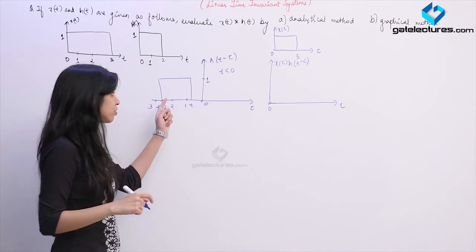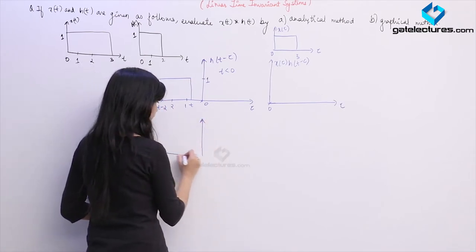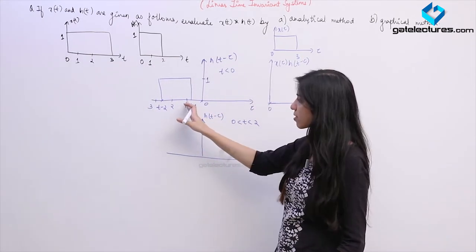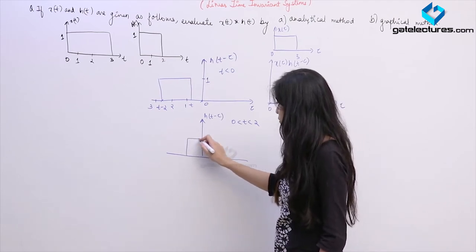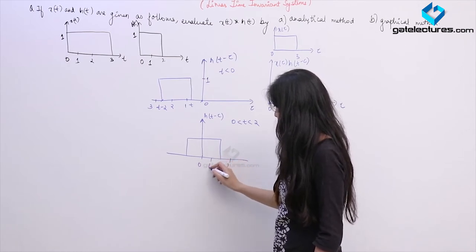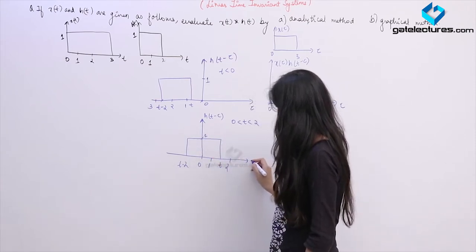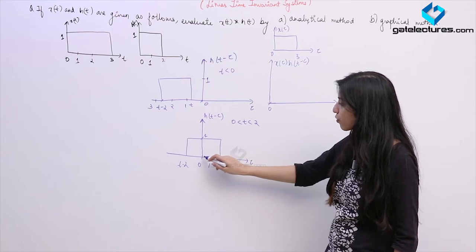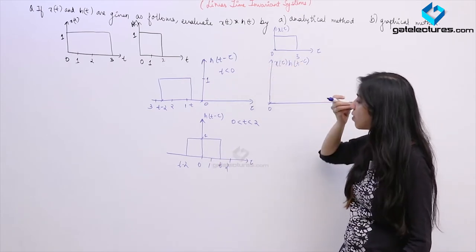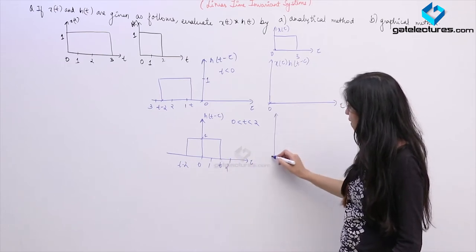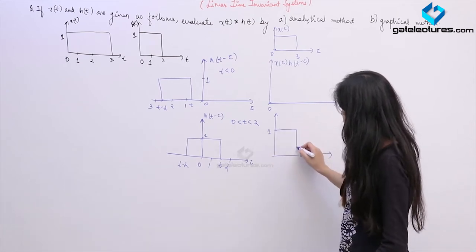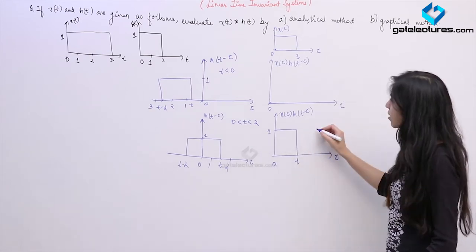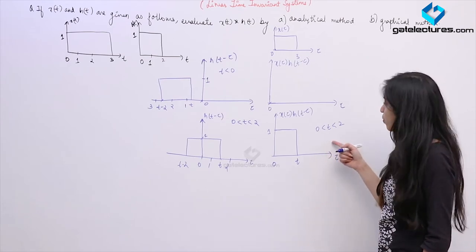Now I shift this pulse. I consider that t lies between 0 and 2. If t lies between 0 and 2, this pulse is going to shift right and become something like this. This is t−2, this is τ. If I want to sketch the intersection of these two pulses, they are going to have some intersection from 0 to t, because this pulse starts at τ=0 but h(t−τ) ends at τ=t. So they are going to have value 1 and intersection from 0 to t — this is x(τ)·h(t−τ) for the condition when t lies between 0 and 2.